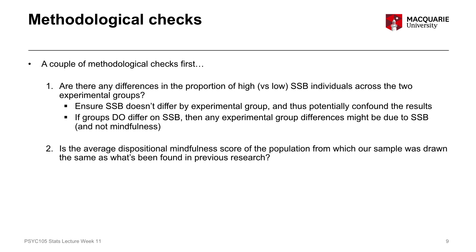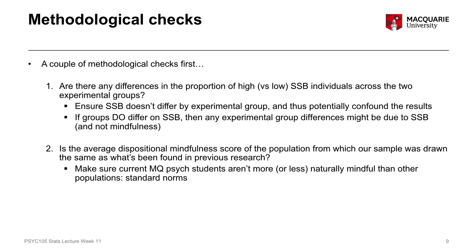The second methodological check is to make sure that our sample isn't any different in terms of their natural tendency towards mindfulness — their natural disposition towards mindfulness — compared to what's been found in previous research. So if we're looking at a sample of Macquarie University psychology students, we want to make sure that they're not more or less naturally mindful than other kinds of populations.